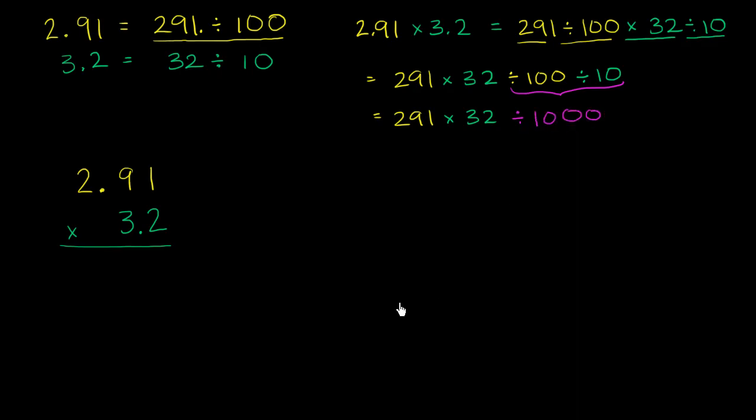Now, why is this interesting? Well, I already know how to multiply 291 times 32, and then we know how to move the decimal so that when we divide by 1,000. So let's calculate 291 times 32.